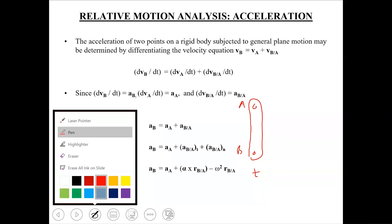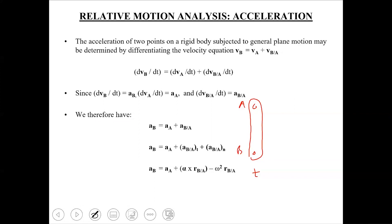At time t plus delta t, let's suppose that this rigid body has moved to its new location, shown here in blue. Since points A and B have undergone different displacements, this rigid body has undergone general plane motion.